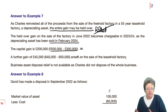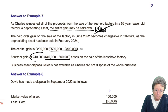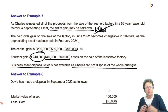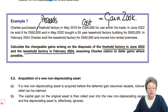Then there's the further gain: proceeds less cost equals gain when the leasehold factory is sold. You can have several reliefs at the same time, so always make sure you're aware of those different ones and how they work together and interact.